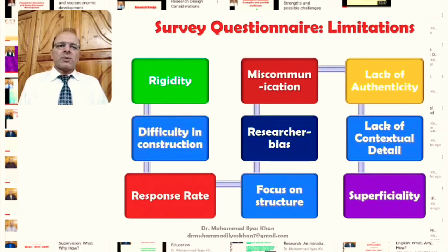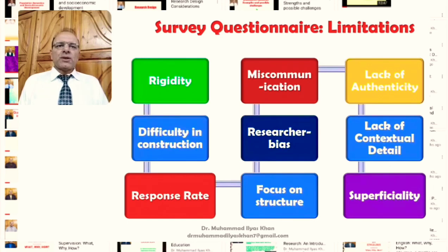Focus on structure is another limitation. In survey questionnaires, structure is very important because the aim is uniformity of data from respondents, which means a lot of focus on structure and lesser focus on content. Fixing items into a rigid structure can lead to miscommunication or can limit the researcher in terms of what they want to ask respondents.